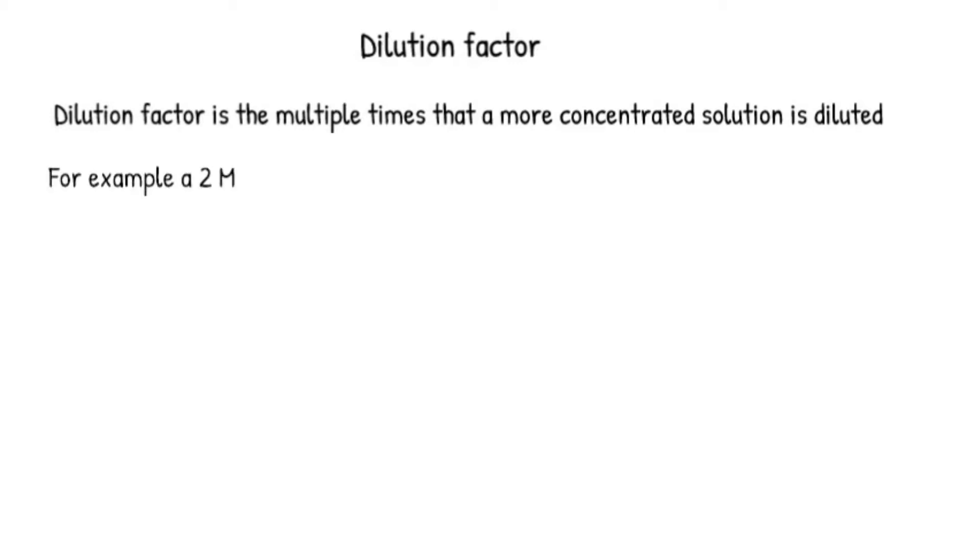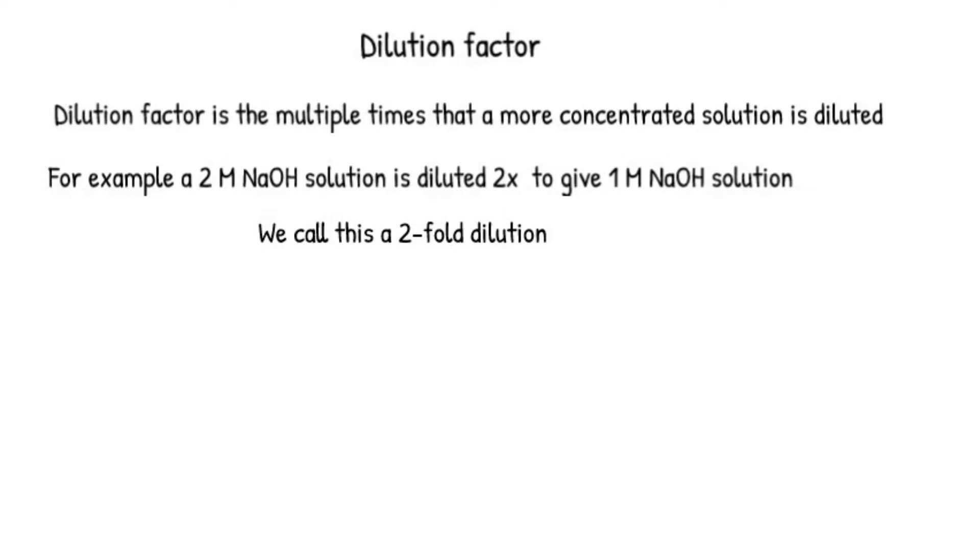For example, a 2 mol per liter sodium hydroxide solution is diluted to give 1 mol per liter solution. This is a 2 times dilution. We call this a 2-fold dilution. To calculate dilution factor, divide the higher concentration by the lower concentration.